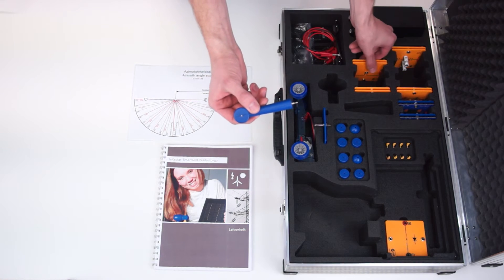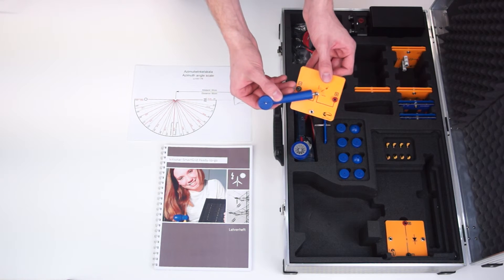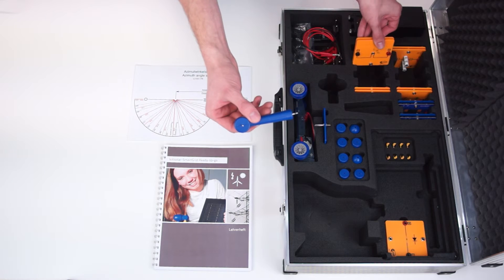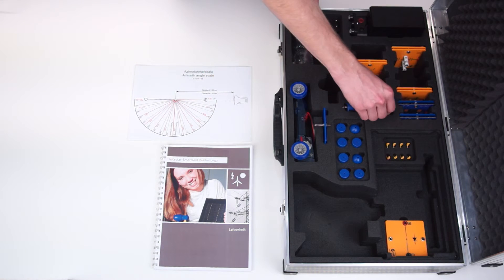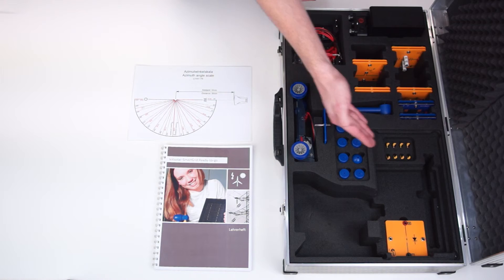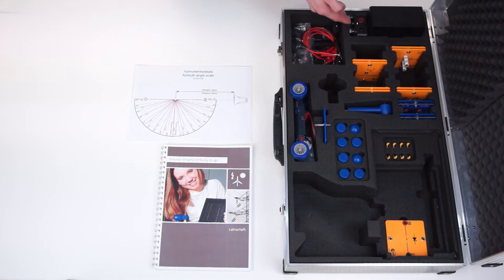As a further source of energy the model of a wind turbine module is also usable. It can be equipped with different blade profiles and with different pitch angles. To regulate the wind a wind machine is available. Meanwhile wind speed can be controlled by the second power module which we set aside at the beginning.